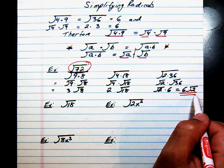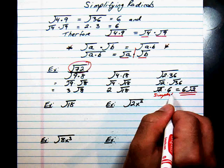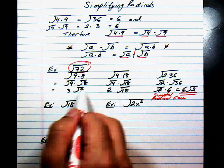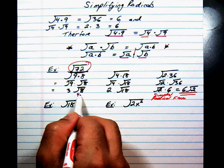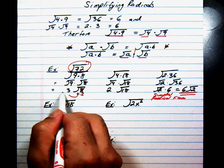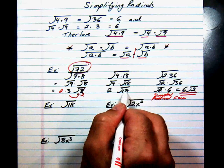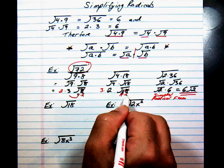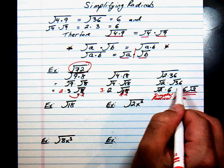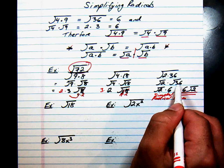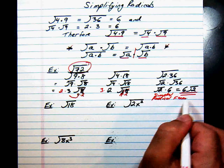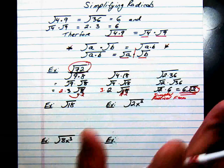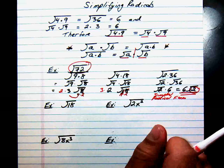However, only the last one — 6√2 — is in simplest radical form. That's because 8 has a perfect square factor: 8 is 4 times 2, and we could bring that 4 out as another 2. Similarly, 18 is 9 times 2, and we could bring out that 9 as a 3. In the last case, we took out the entire 36. A radical is in simplest radical form when there are no perfect square factors underneath the radical.